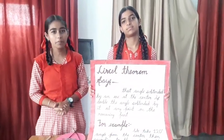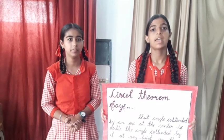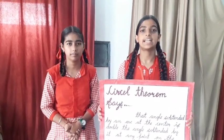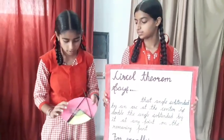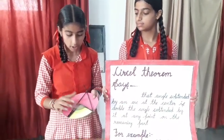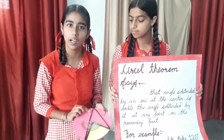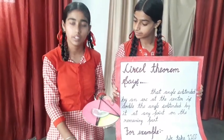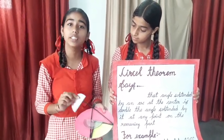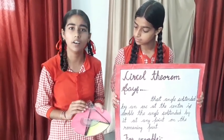Greetings to all. Welcome to all in the master. I am Bhubik and I study in 9th standard. Today's activity is the Circle Theorem. My name is Kami Sharma and I study in 9th class. Now let's try this activity. The Circle Theorem says that the inscribed angle is half of the central angle of the remaining part of the circle. We take 70 degrees at the center and the outer part of the circle will be 35 degrees because it is half of 70 degrees.